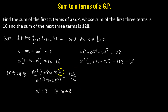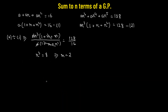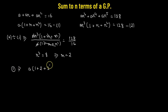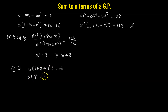Now that we have the common ratio R, we use equation 1 to find the first term A. From equation 1: A × (1 + R + R²) = 16. Substituting R = 2: 2² is 4, 4 + 2 = 6, 6 + 1 = 7. So 7A = 16, and dividing both sides by 7, A = 16/7. This is our first term.